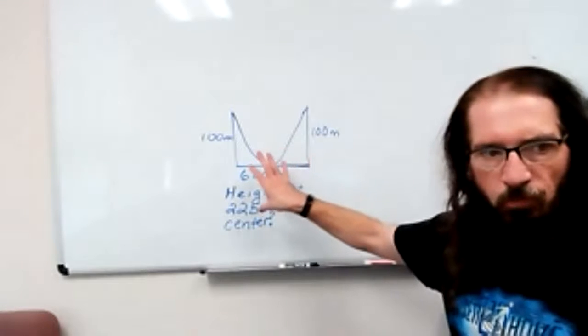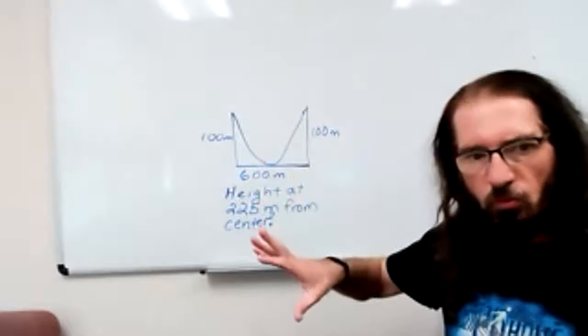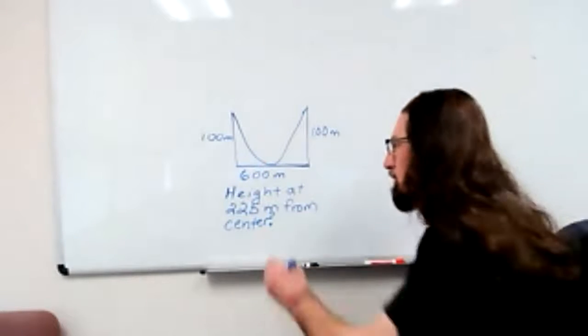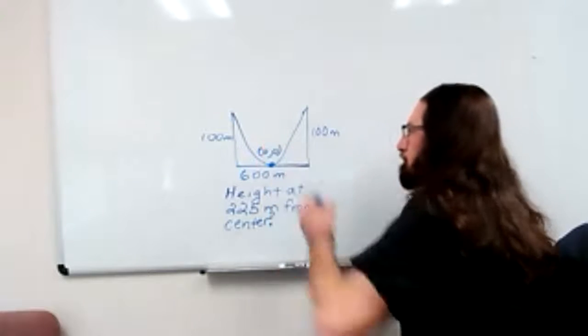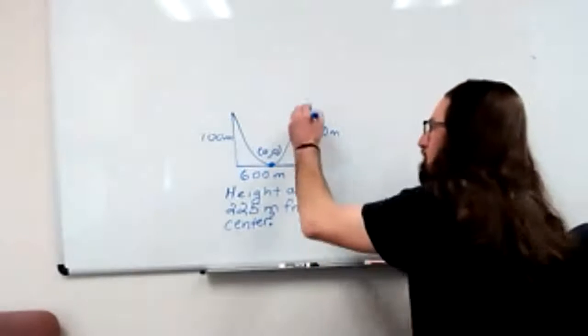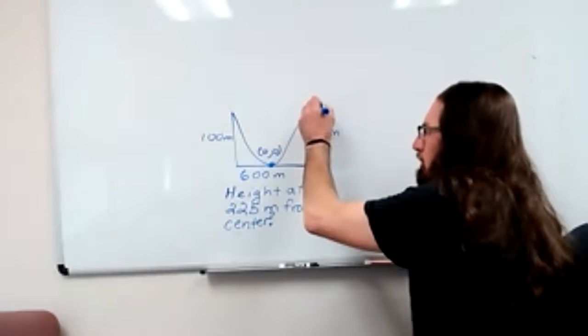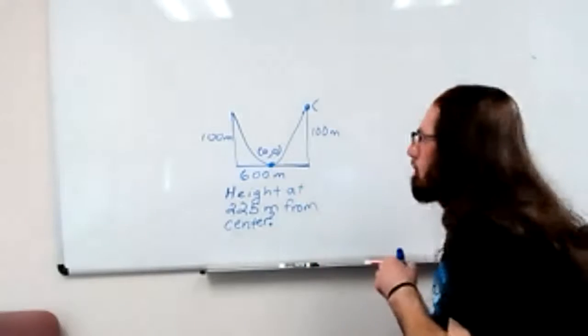Set up the coordinate system. Find out the function. What we want to do is pick a coordinate system that's going to be easy to work with. So we can make the vertex zero zero. And so this would be 300 comma 100.